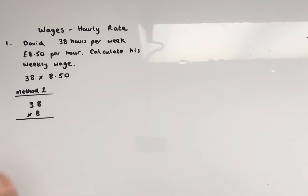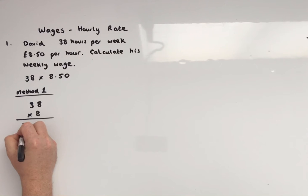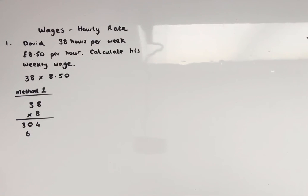Okay, so 8 times 8, 64. 8 times 3, 24. Add the 6, 30. Right, so we've got £304 from that.